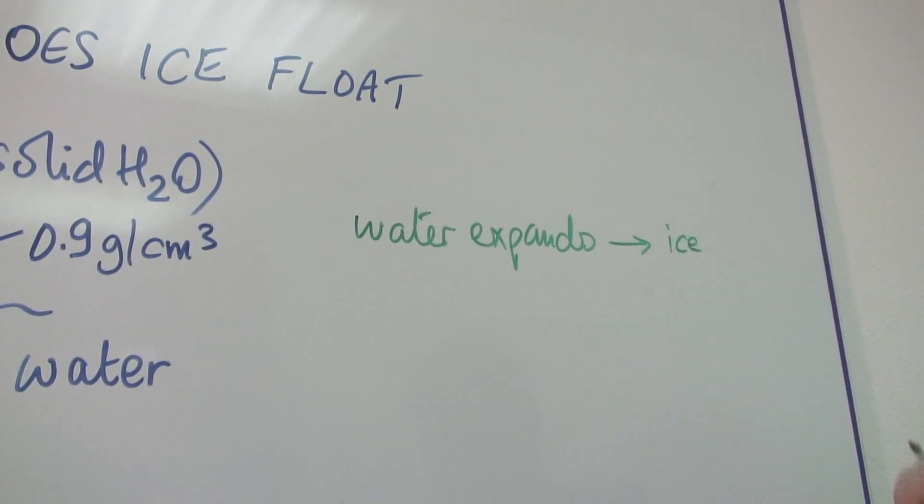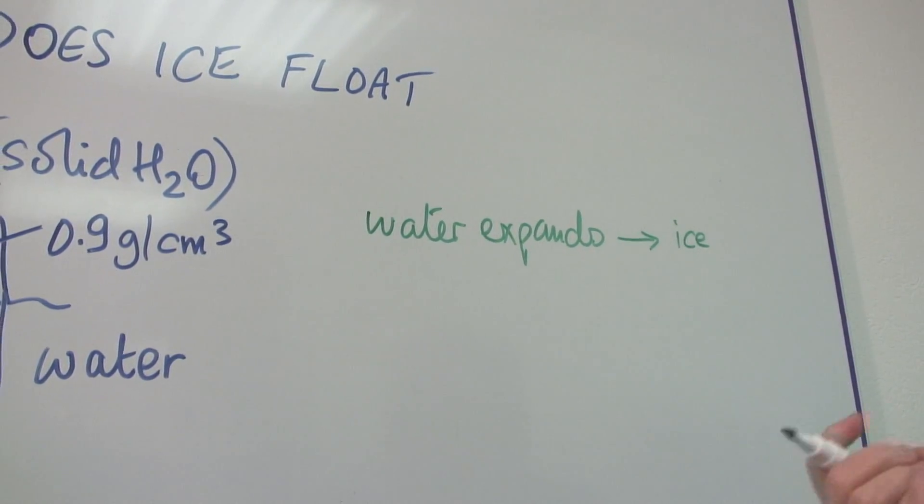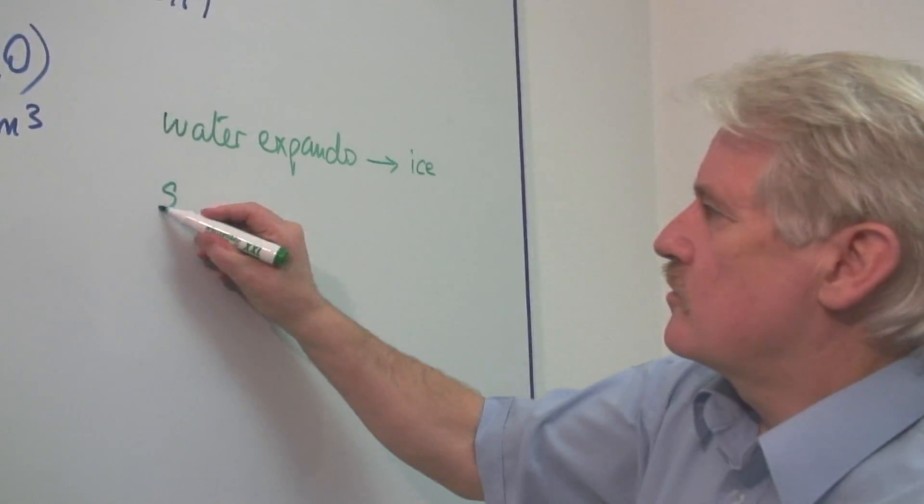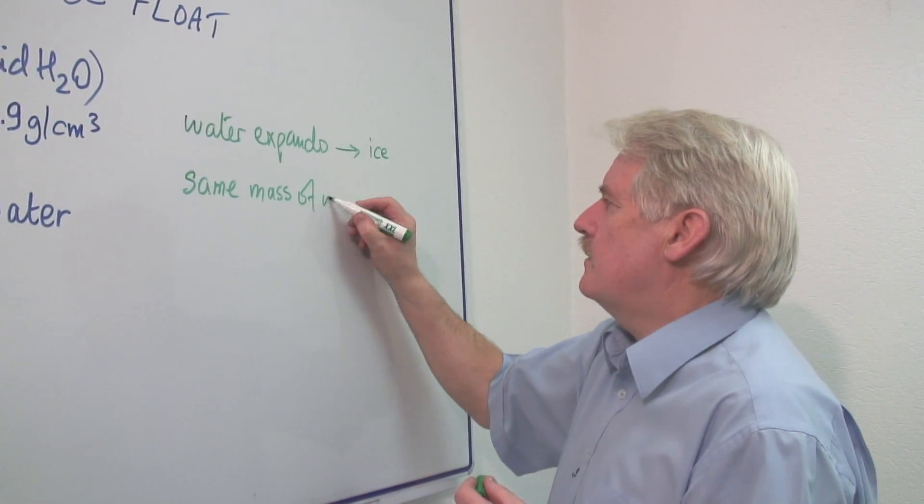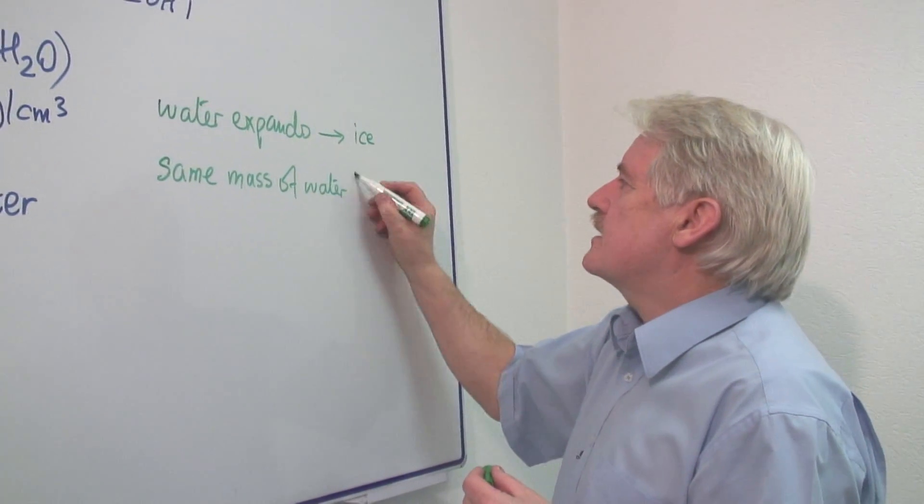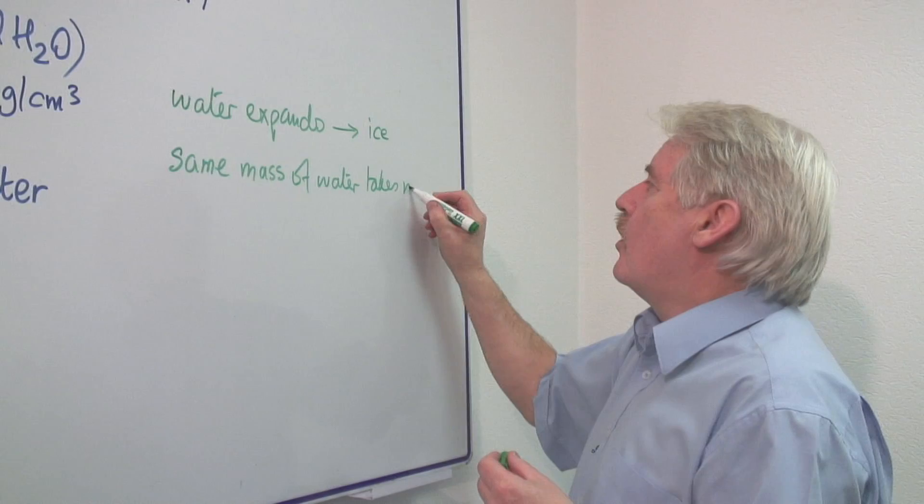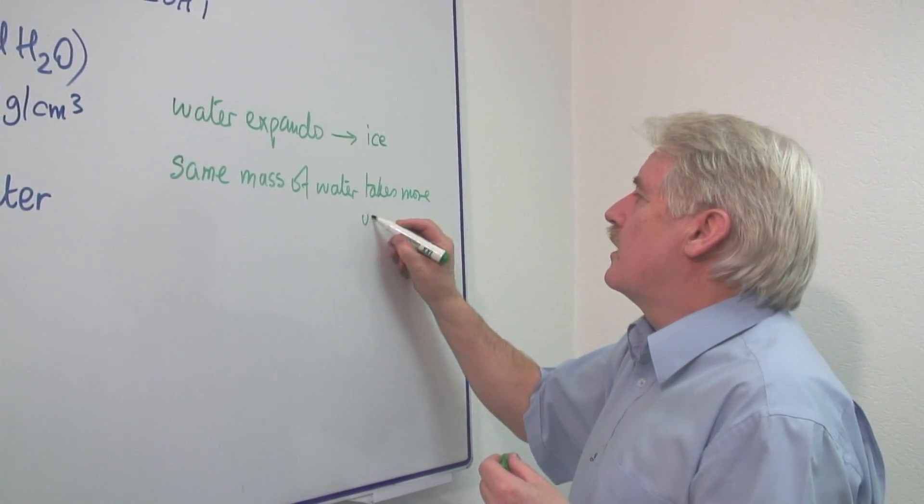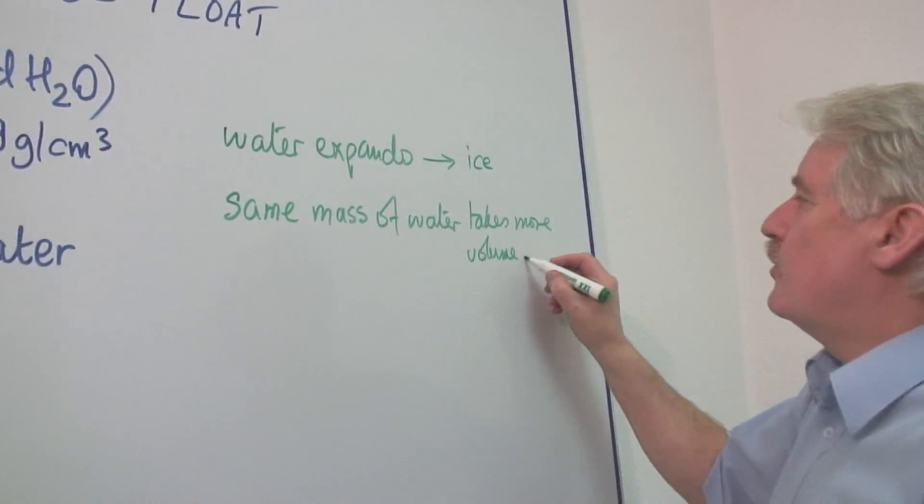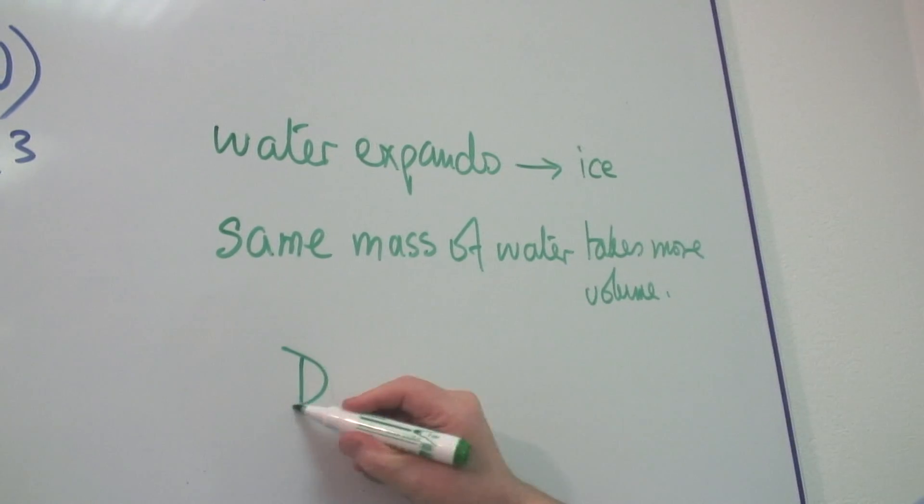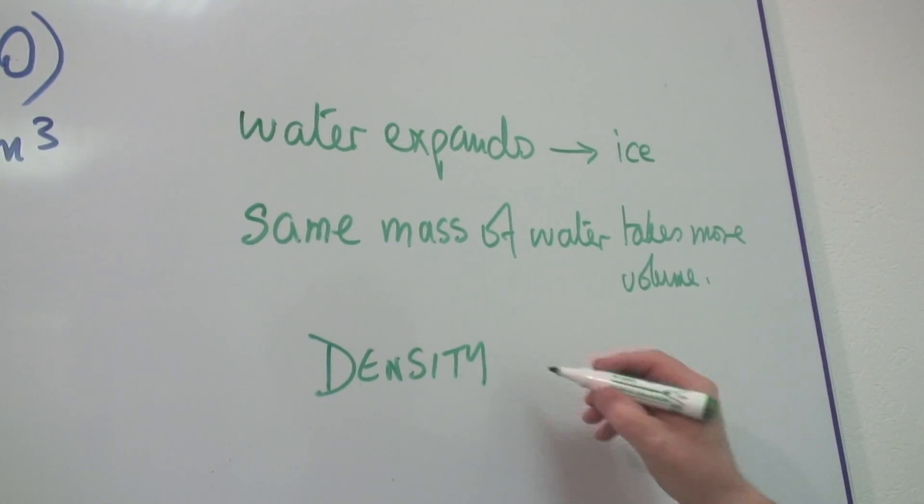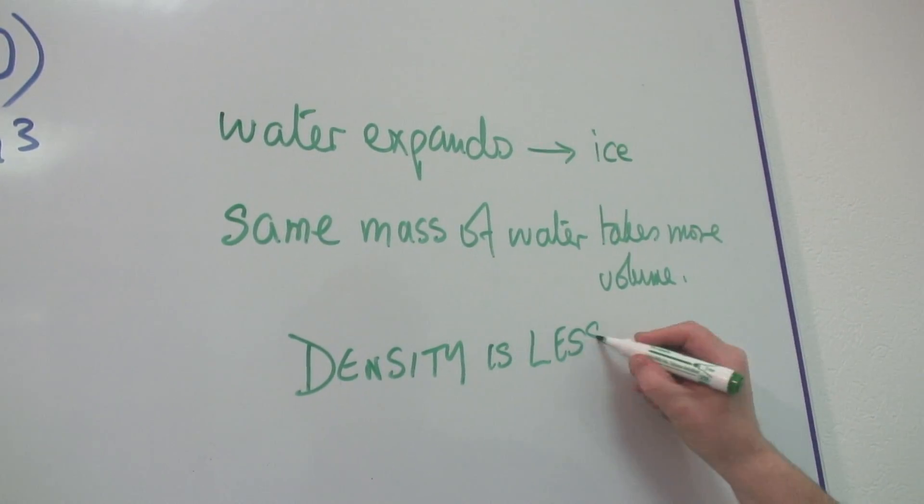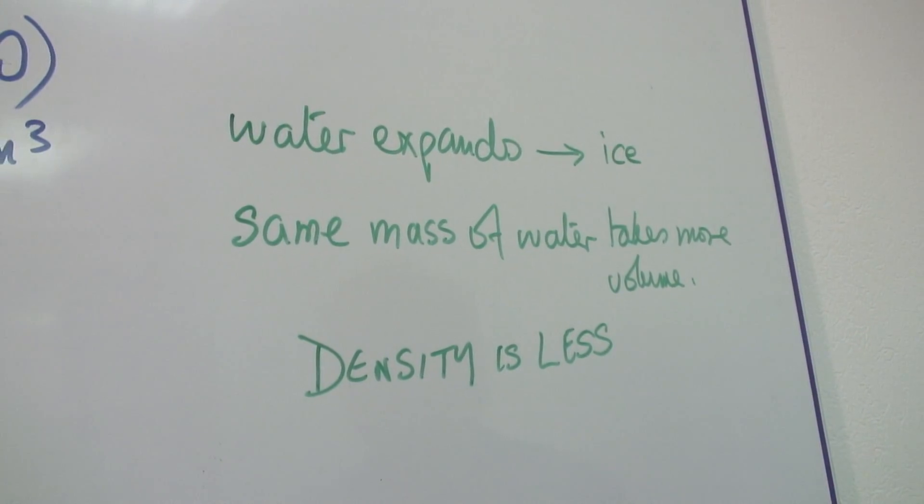So that means that the same weight of water, or the same mass we should say, same mass of water takes more volume and therefore the density is less. So the density of ice is less than the density of water.